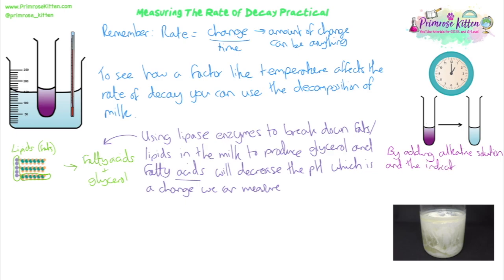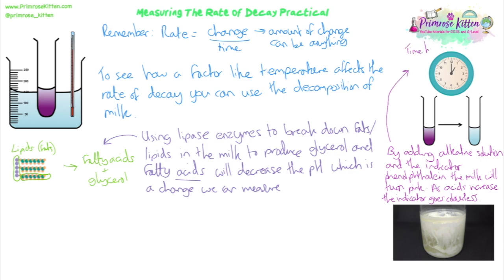The lower the pH gets, the more acids there are, the more colorless the indicator is going to become. Because we're calculating rate, if we time how long it takes for that change from pink to colorless, then we can work out the rate. So just measure the time it takes for the color to go from pink to clear — that's how you estimate the rate of this reaction.